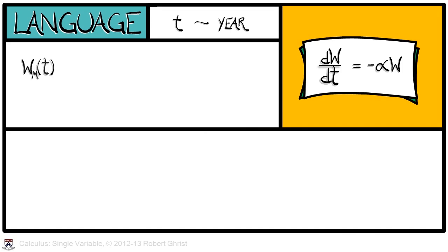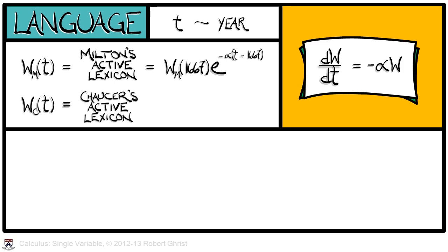Well, let's say that T corresponds to the year. However, we're going to be interested in two functions of T. The first, w sub m, is the number of words in Milton's usage currently used at time T. That is, according to the solution to this differential equation, w sub m at 1667, the initial condition, times e to the minus alpha times the number of years that have elapsed since 1667. Likewise, we'll be interested in WC of T, the number of words from Chaucer's time still in common usage. This has the same solution with 1667 being replaced by 1400. Most importantly, the alphas are assumed same because this is all English.